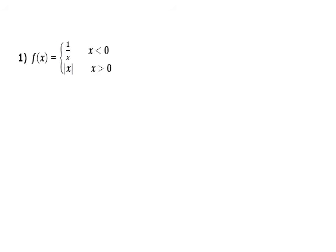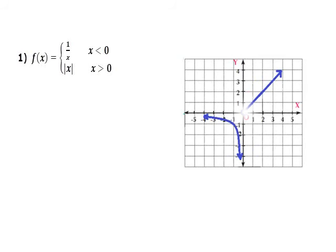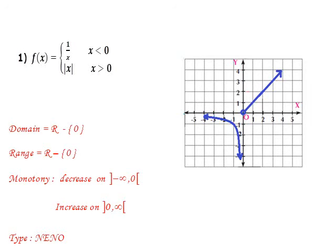Here we have another type: the piecewise function, defined as 1/x when x < 0, and |x| when x > 0. To draw it: |x| when x > 0 is a straight line, and 1/x when x < 0 is a curve. The domain is ℝ except 0, because 0 is open on both intervals, and the range is ℝ except 0. The function decreases from 0 then increases from 0 to infinity.